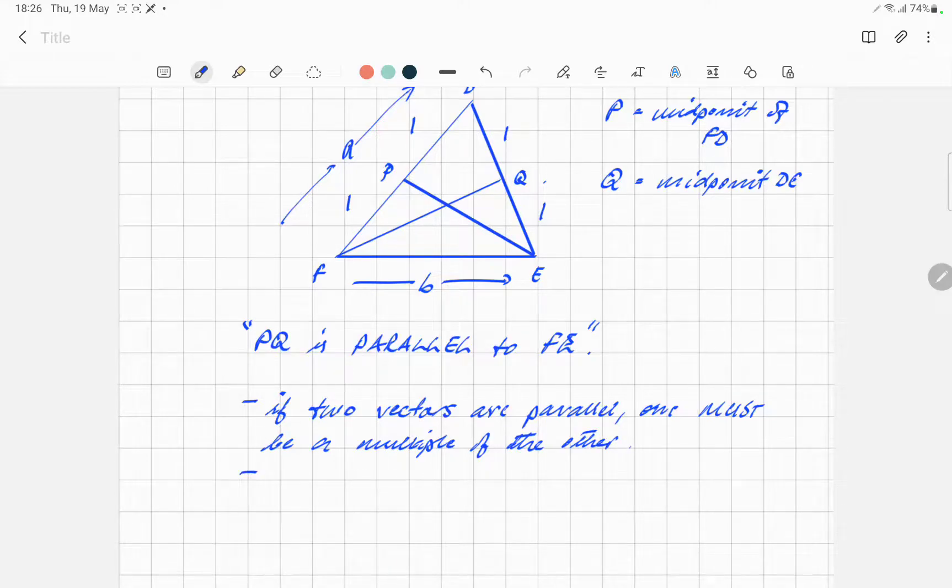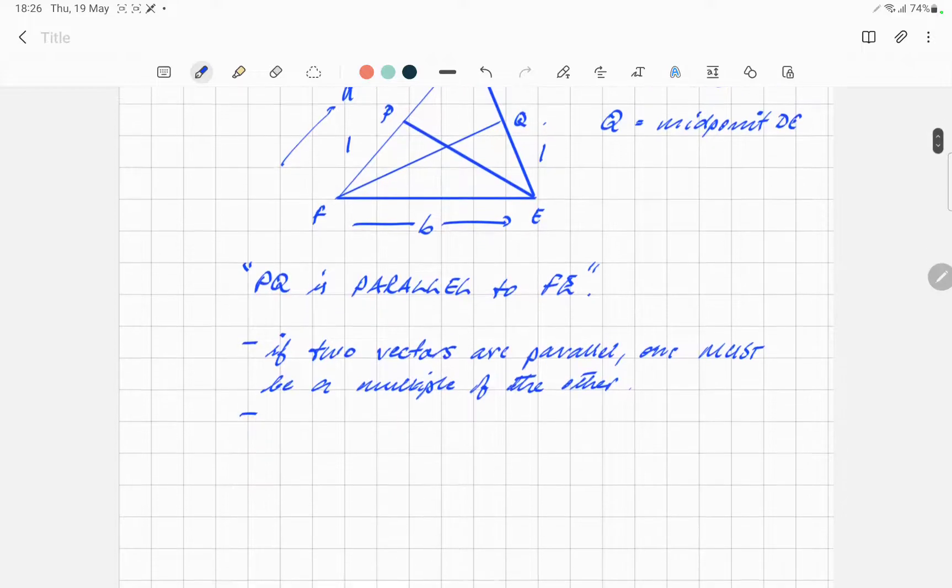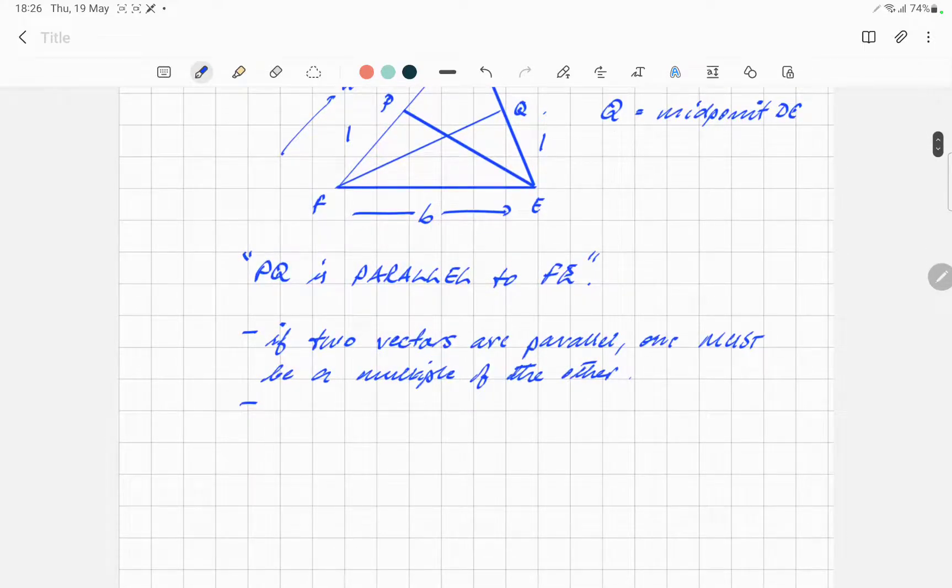Another statement, just for other questions, in case you ever need it, is that the two vectors must have the same ratio of components, i.e. A and B. So, for example, I'll just show you what that means.